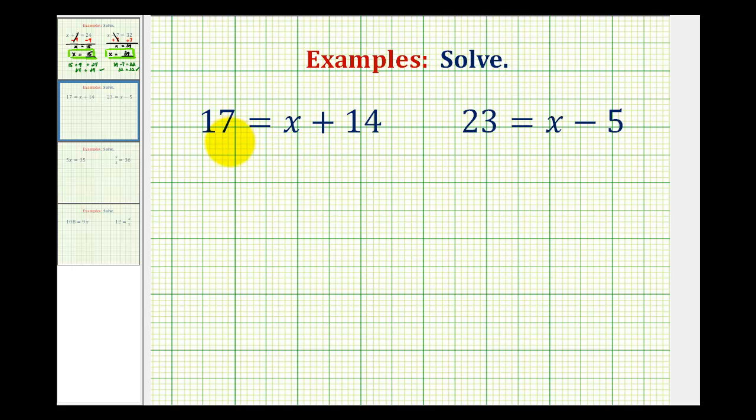Looking at this first equation, 17 = x + 14, since the variable is on the right side, we want to isolate the variable on the right side. To solve this equation, we want to rewrite it in the form of some number equals x.